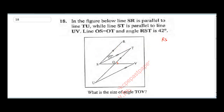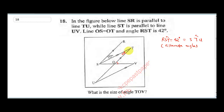Angle RST is 42 degrees, which is equal to angle STU. The reason for this is that they are alternate angles. You can see that line SR is parallel to UT, so this angle is also going to be 42 degrees.